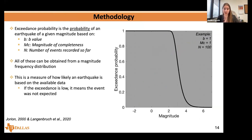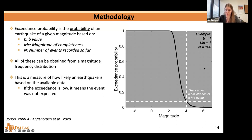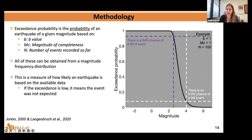The B-value alone is often not quite enough to quantify risk. There's a parameter called the exceedance probability used for this purpose — the probability of an earthquake of a given magnitude based on the B-value, the magnitude of completeness (the lowest magnitude at which you feel you've captured all events), and the number of events recorded so far. Basically, it's a measure of how likely an earthquake is based on available data. For example, with a B-value of 1, magnitude of completeness of 1, and 100 events, there's about an 8.5% chance of a magnitude 4 event, and a 94% chance of a magnitude 2.5 event.